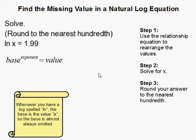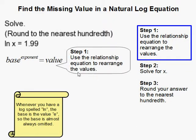How to find the missing value in a natural log equation. The first step is to use the relationship equation to rearrange the values.